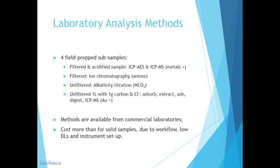Once we've collected, stabilized, and prepared our sample, we've got four prepared sub-samples heading to the laboratory: a filtered and acidified sample for metals. We're using ICP-AES and ICP-MS for our metals — an approach that's been around for about 20 years. Ion chromatography is used for anions. We use an alkalinity titration for bicarbonate, and a pre-concentration technique for gold involving taking a one-litre water sample and concentrating gold onto a one-gram sachet of activated carbon to allow a significant improvement in detection limit.